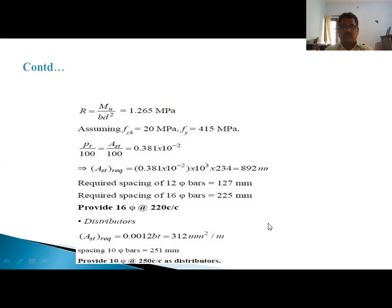Now for distribution steel, the area required is 0.0012bt, that is 312 mm² per meter length. By providing 10 mm dia bars, spacing is 251 mm. Hence provide 10 mm dia at 250 mm center to center as distribution bars.